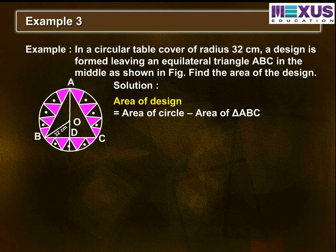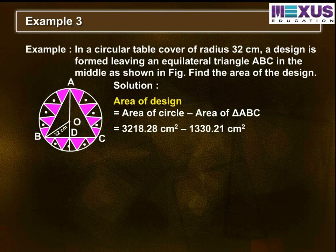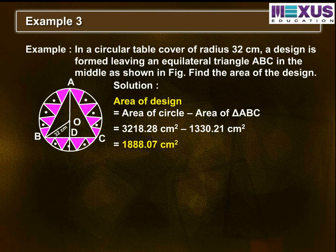Now, calculating the area of the design: area of the design equals area of circle minus area of triangle ABC. By substituting the values, we get 3,218.28 cm squared minus 1,330.21 cm squared, which equals 1,888.07 cm squared. Thus, the area of the design equals 1,888.07 cm squared.